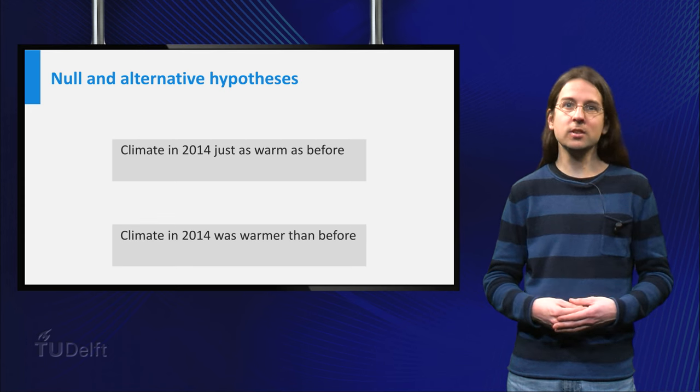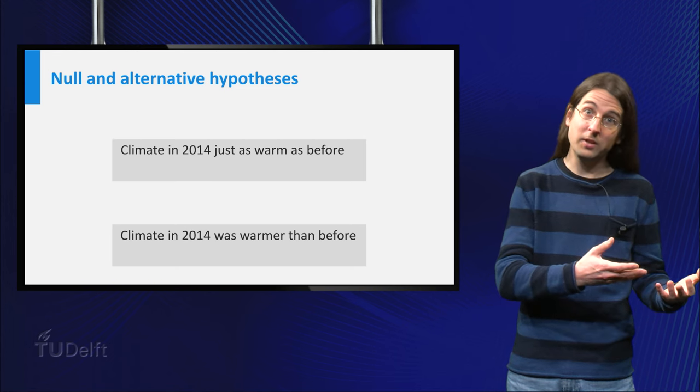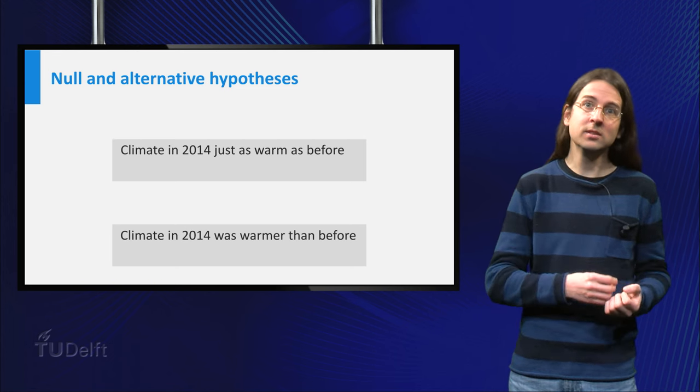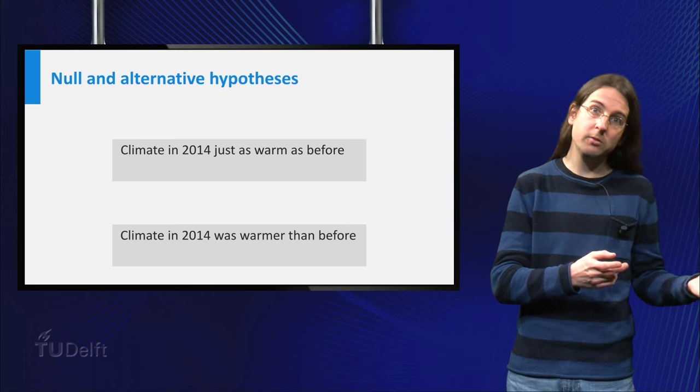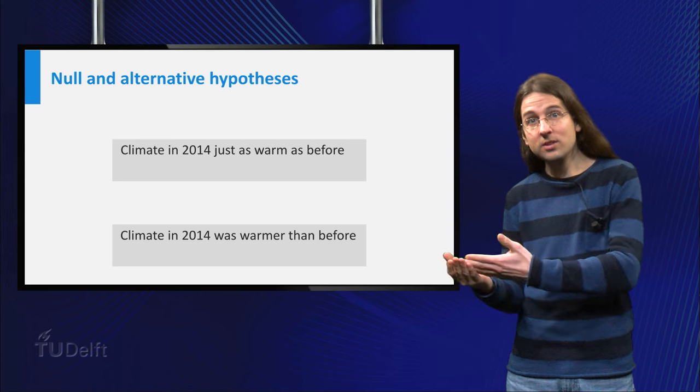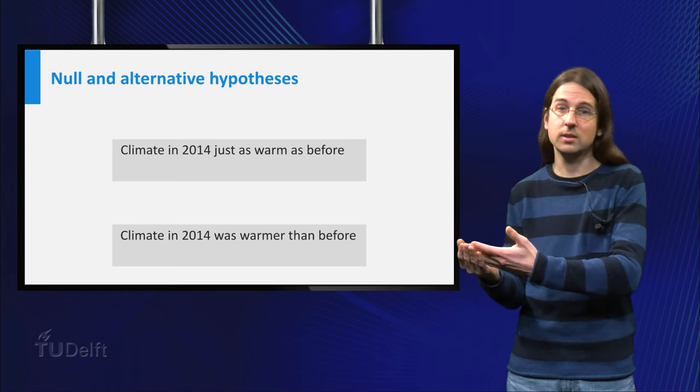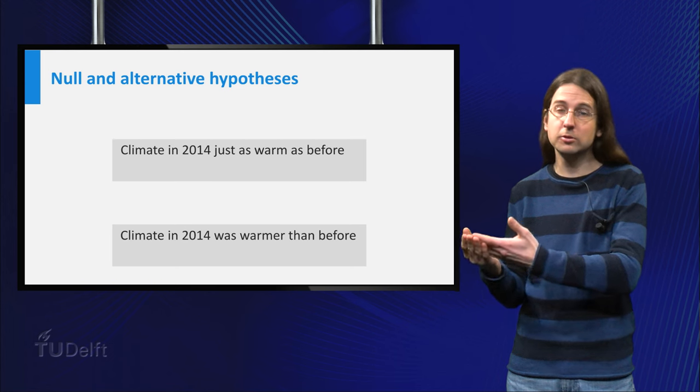In this case, we want to consider the two possibilities: the climate in the Netherlands in 2014 was identical to that over the period 1981 to 2010, versus the climate in the Netherlands in 2014 was warmer than that over the period 1981 to 2010.